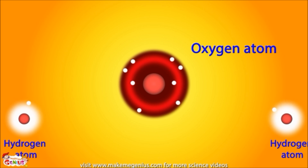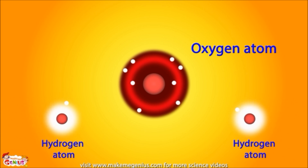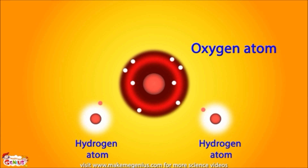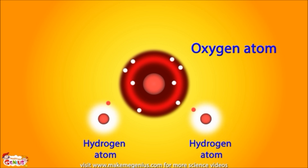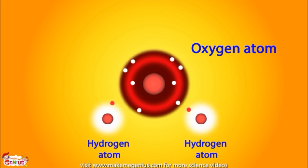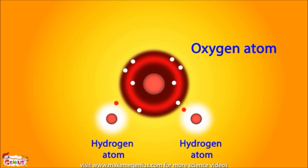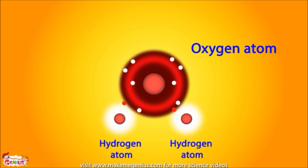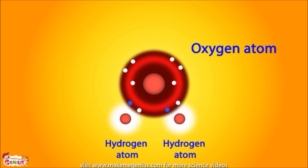Here is a hydrogen atom. It only has one electron in its outer shell, but it can hold two electrons in its shell, so it is also looking for more electrons. The oxygen atom bonds with two hydrogen atoms to fill its valence shell by sharing one electron from each hydrogen atom.